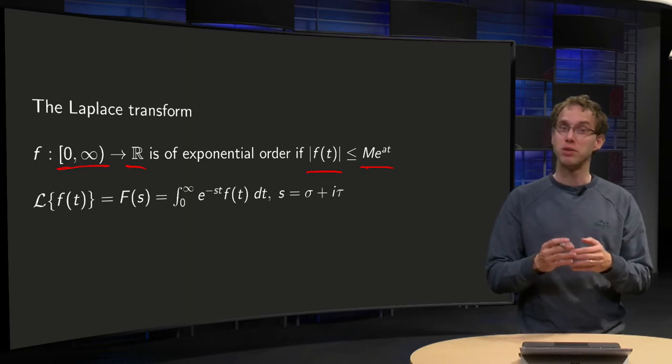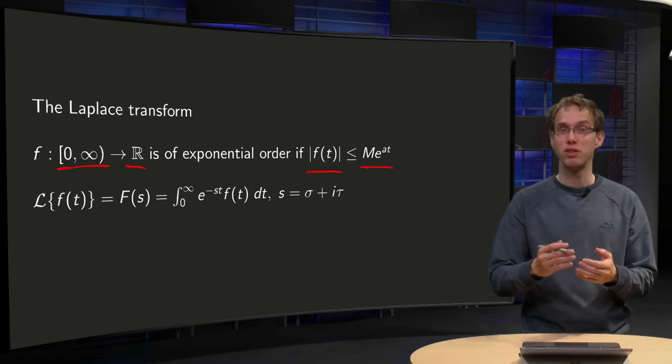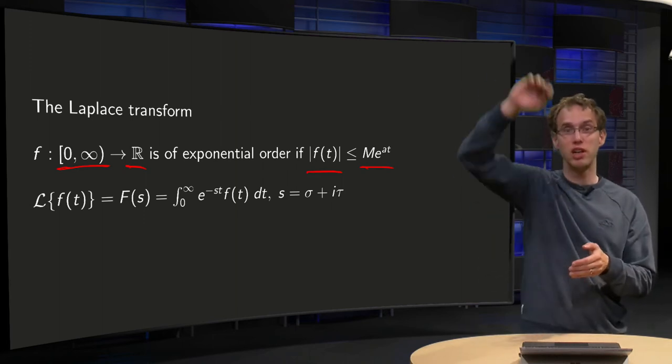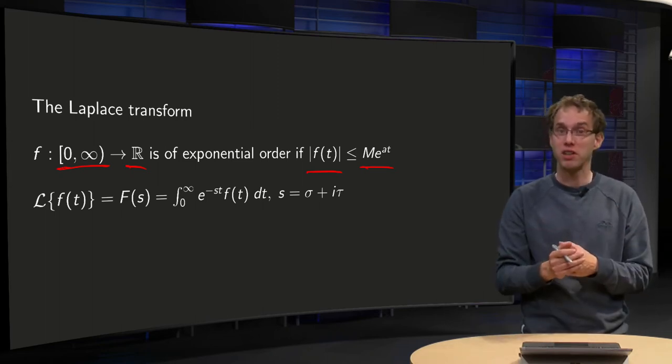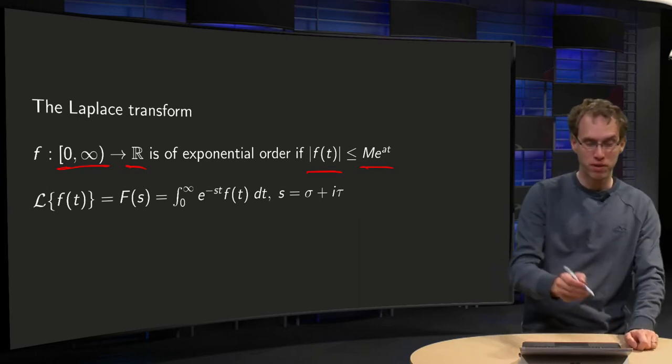Your f can become really large because it only has to be below an exponentially growing function. So, this M times e^(at) can grow exponentially. So it can become really large. f is below that, but f can become very large itself as well. So, how is our Laplace transform defined then?